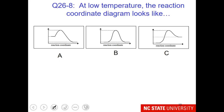Based on your signs of ΔH and ΔS, at low temperature — which means the ΔH term is the one that's important — what would this reaction look like? Does it go uphill or downhill, or stay the same at low temperature?